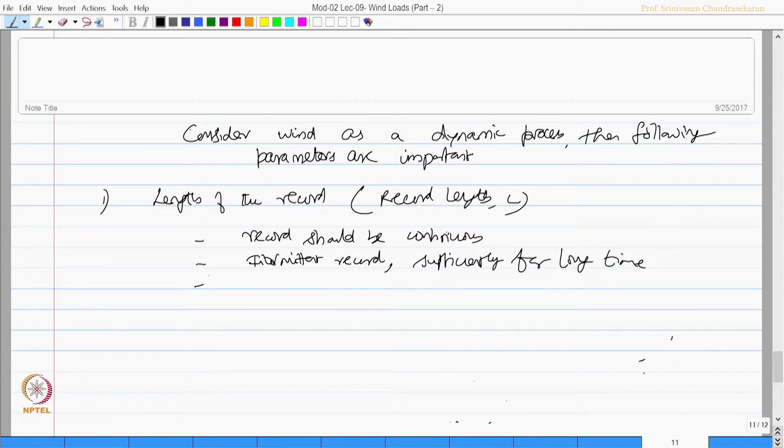Sometimes, they are also measured depending upon the choice, that is when the wind speed exceeds a particular threshold value only then you record. Recording has got different options. It can be continuous, it can be intermittent at constant intervals. Let's say every 10 seconds, every 1 minute you can record. You can also do it by choice like when the wind speed exceeds threshold value you record, otherwise you do not record.